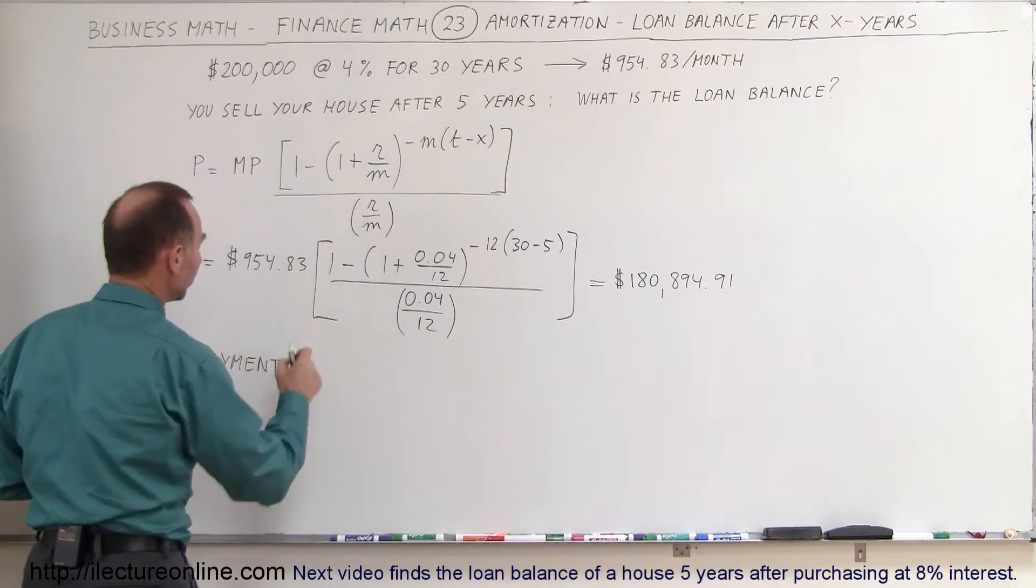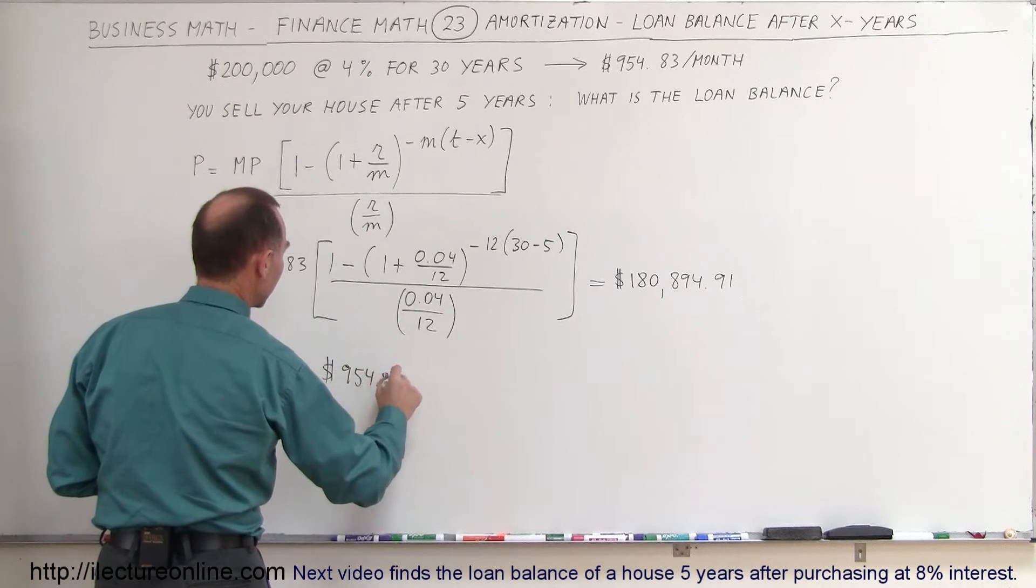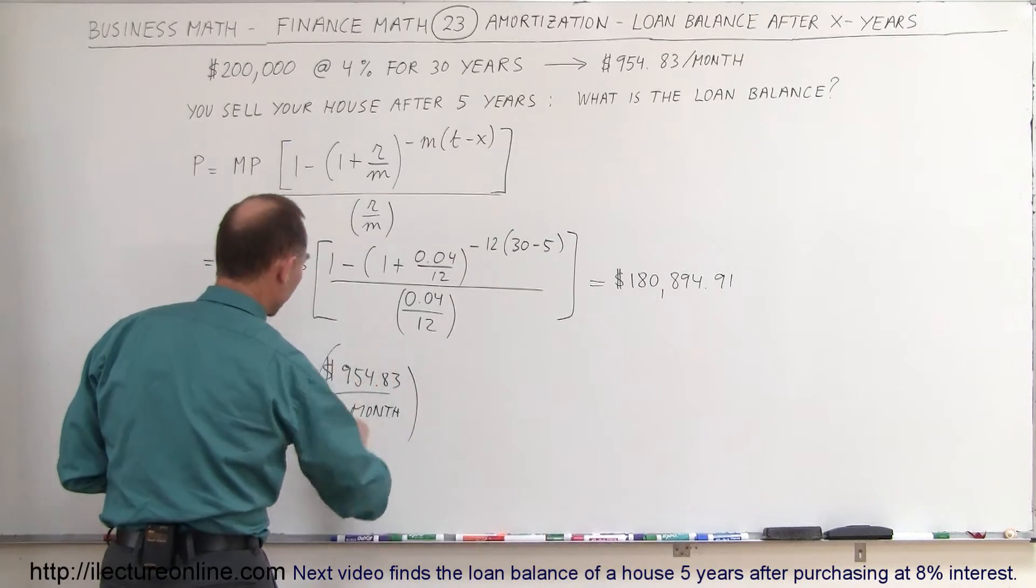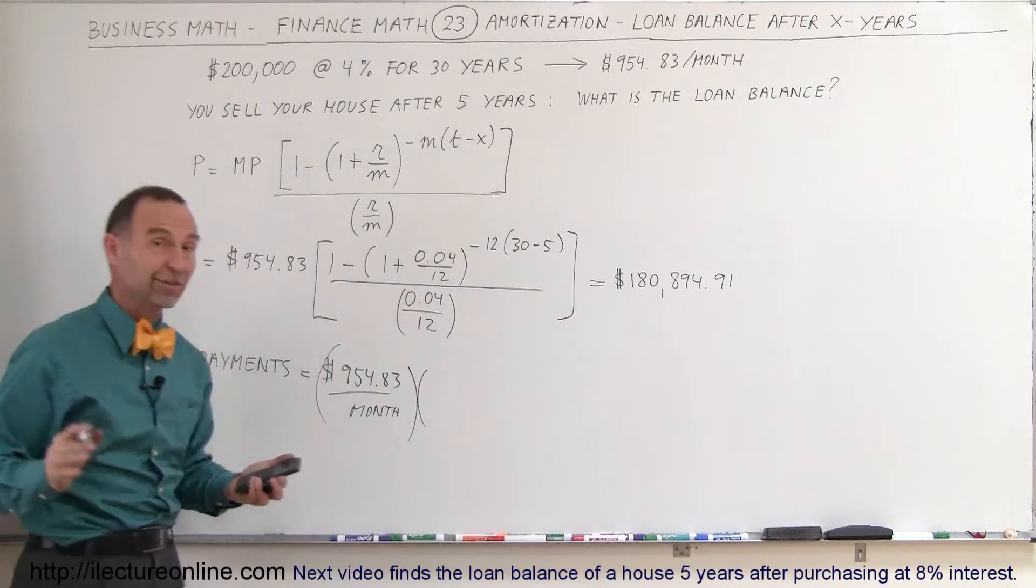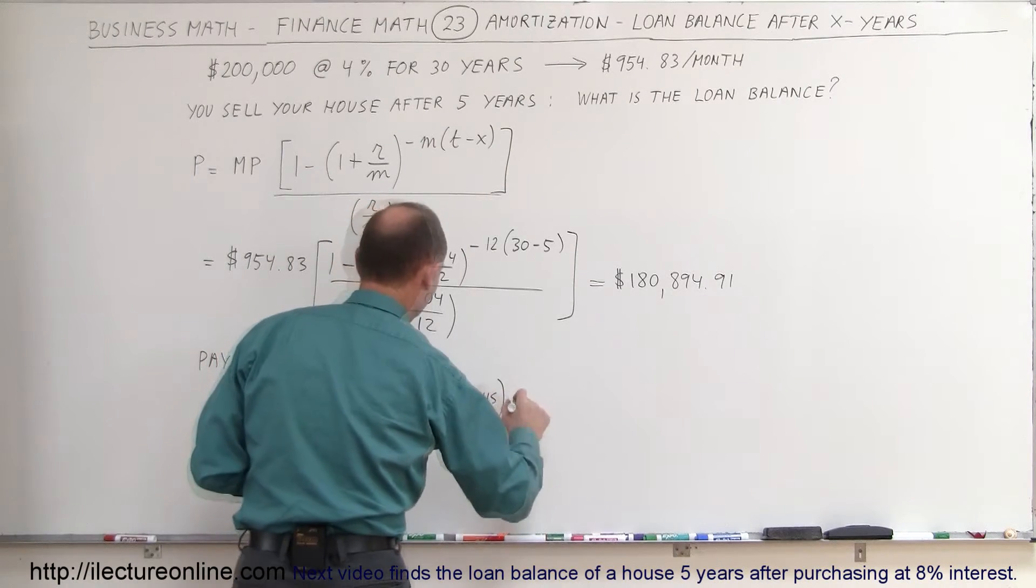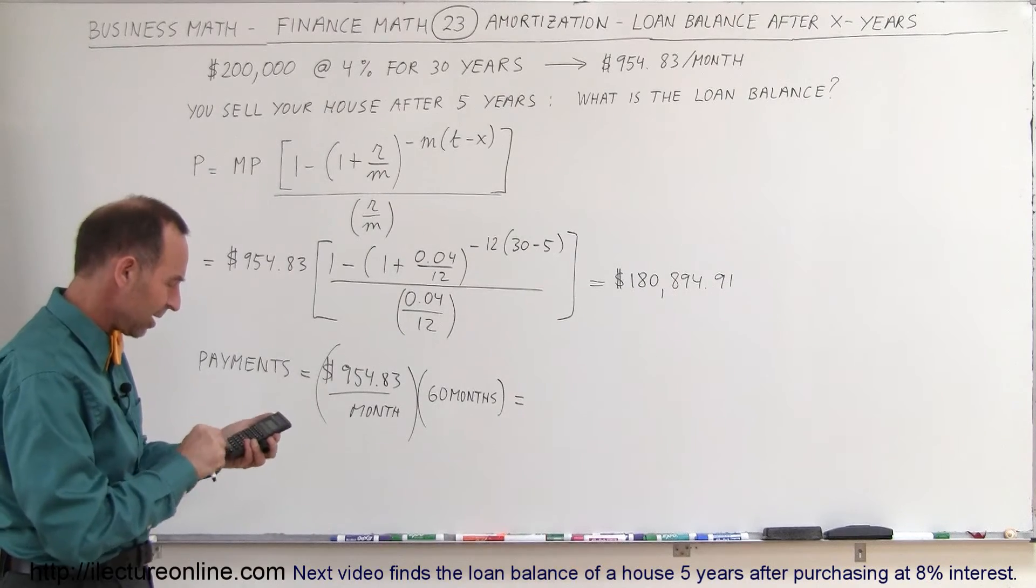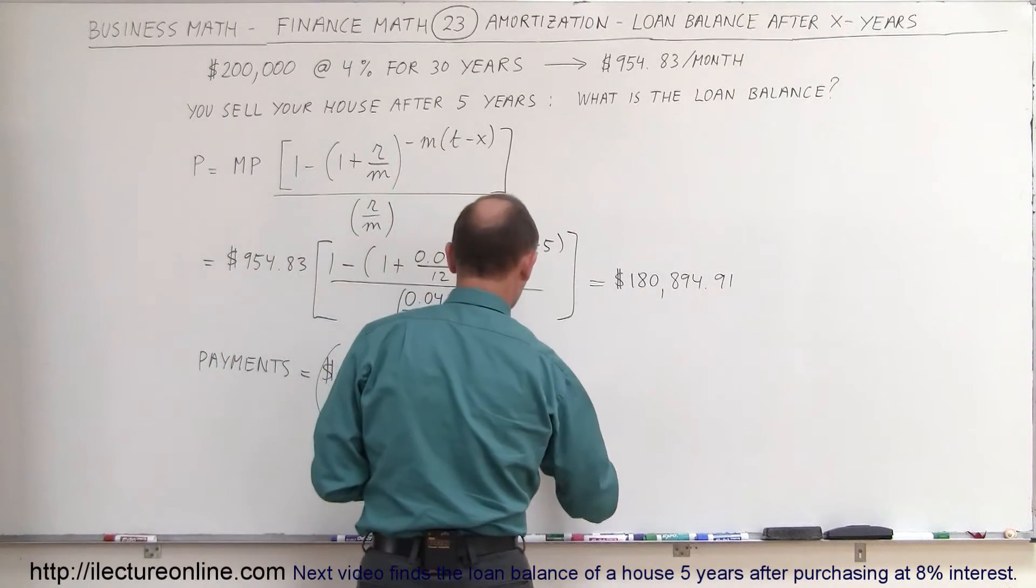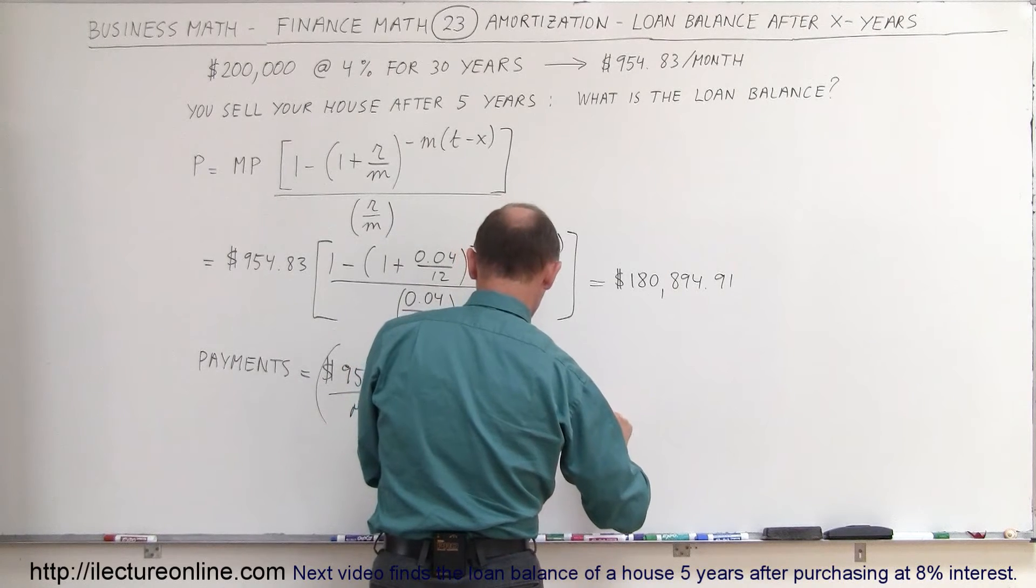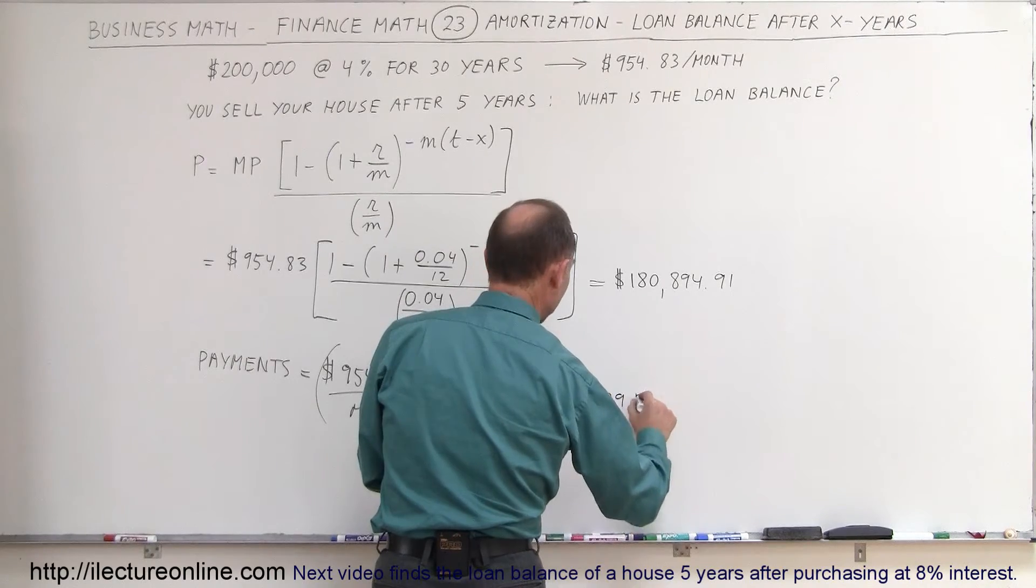would be equal to the monthly payment of $954.83 per month, and we multiply that times the number of months that you've made payments after five years. That's 60 months. So multiply it times 60 months. And let's see what that is. So $954.83 times 60 equals, so far, after the first five years, you will have paid the bank $57,289.80.